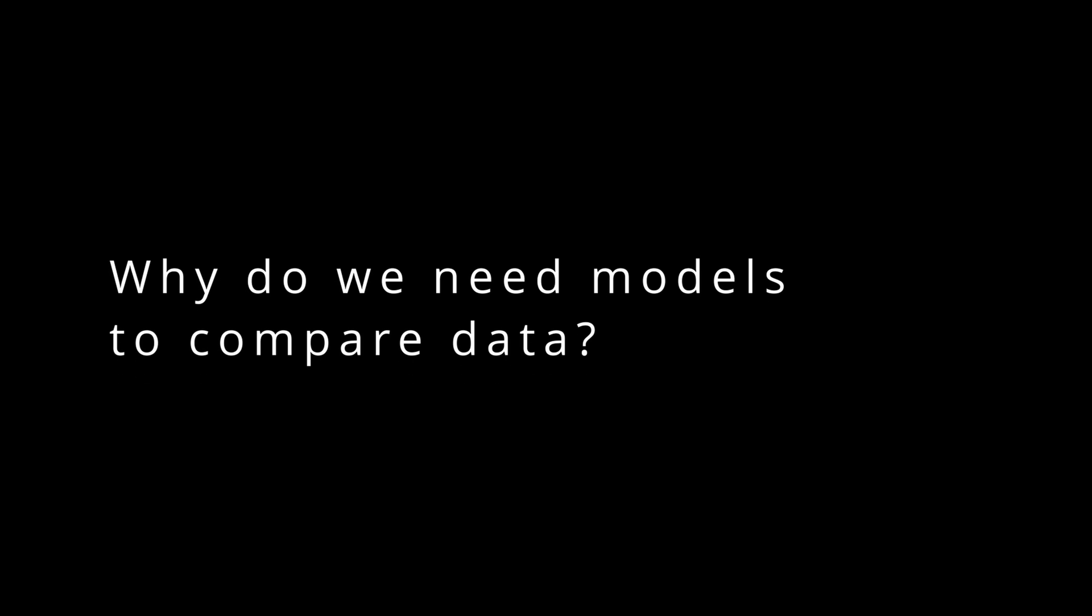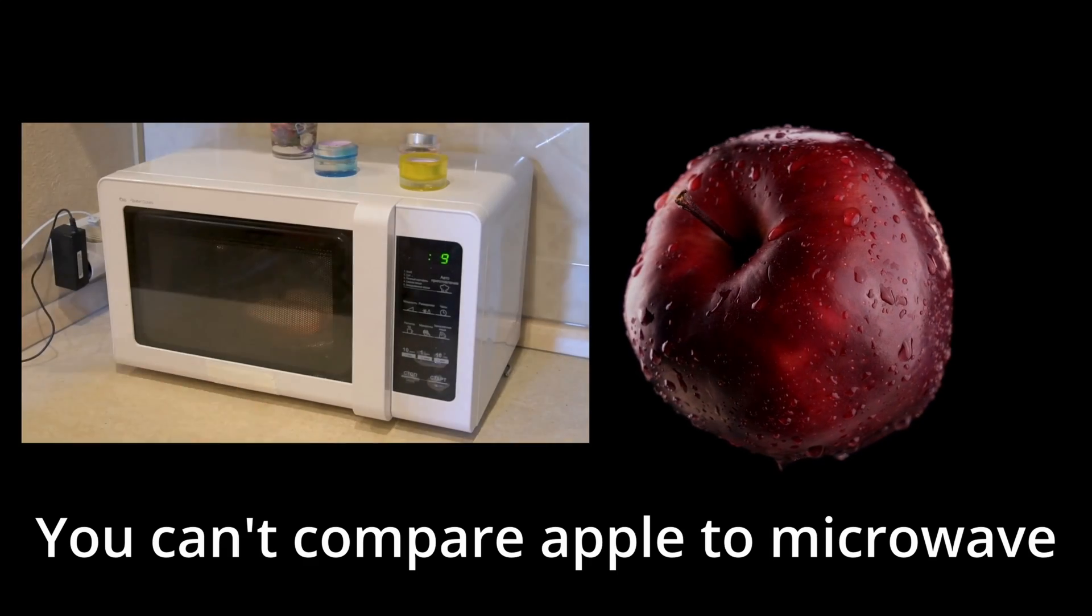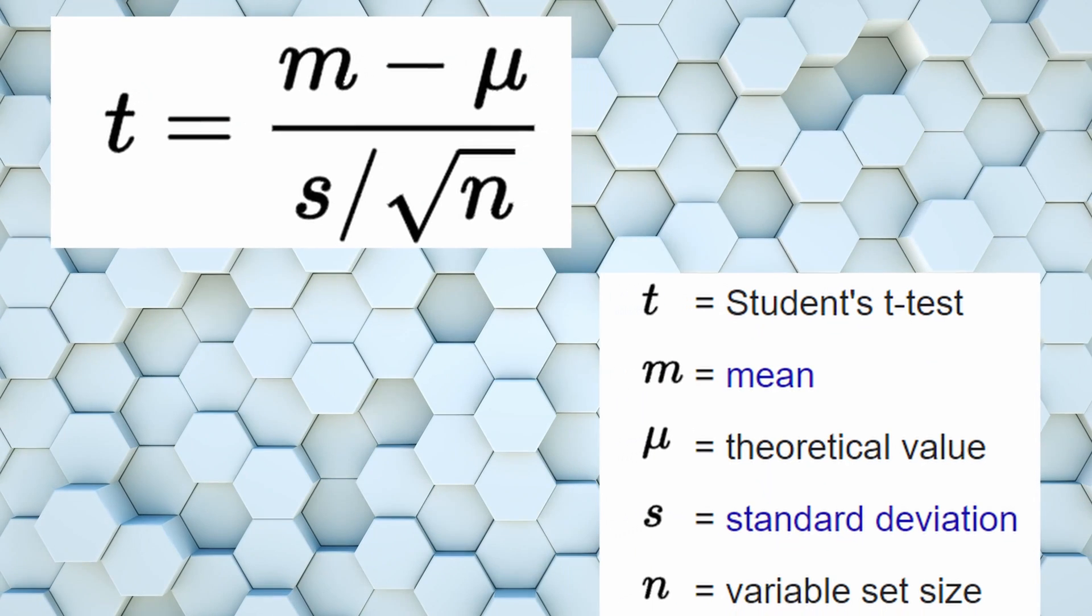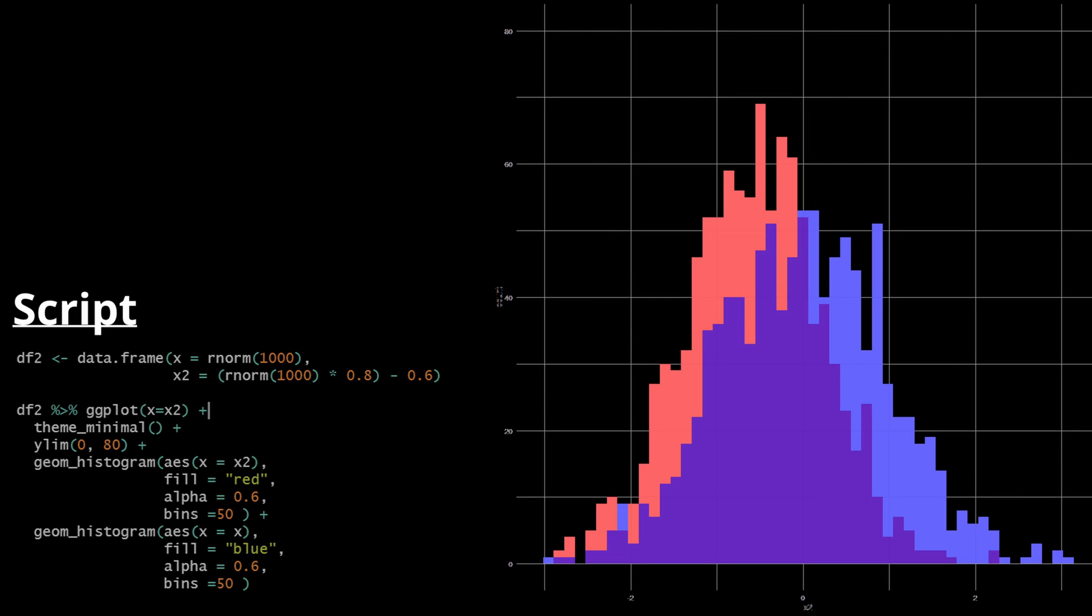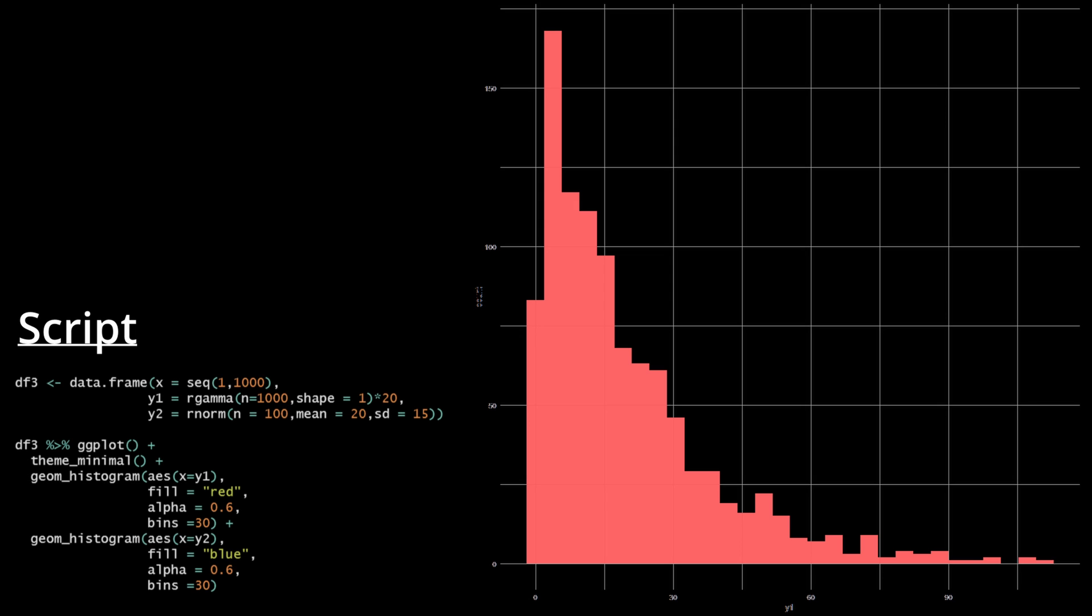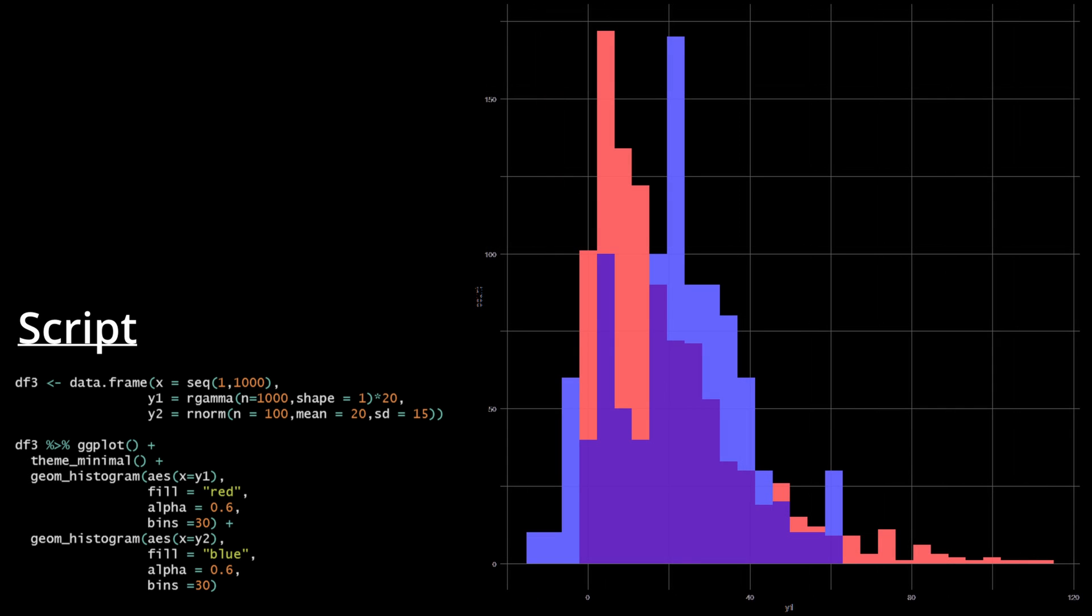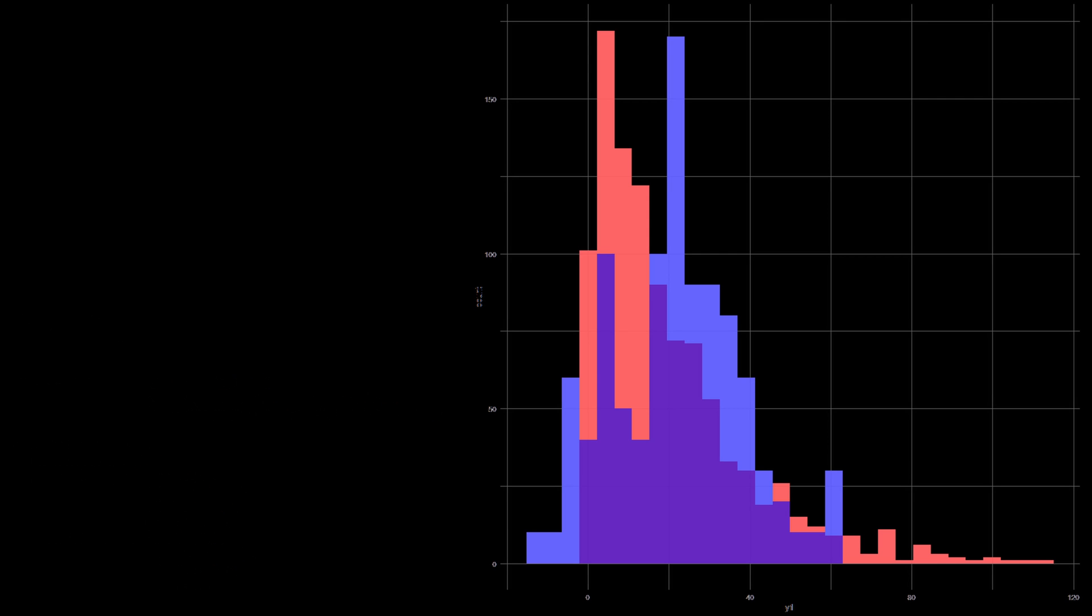Why do we need a model to compare data? Understanding the difference between two populations requires a model to compute. If we are running a t-test between two datasets, we have assumed that the two sets of data follow a normal distribution. For some data like income level between two groups, a t-test will not be able to tell you the answer since income is usually negatively skewed and does not follow a normal distribution.